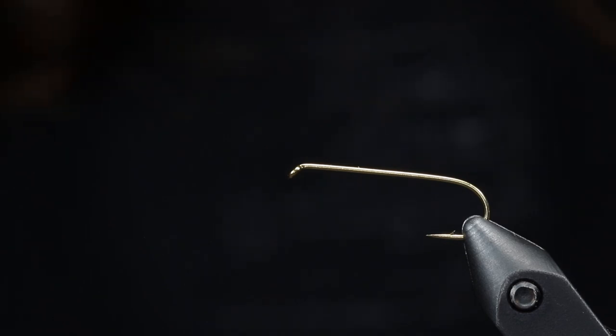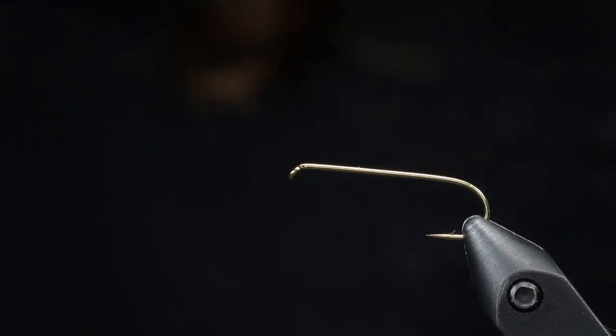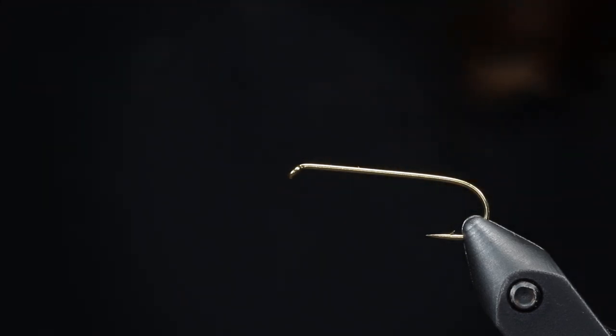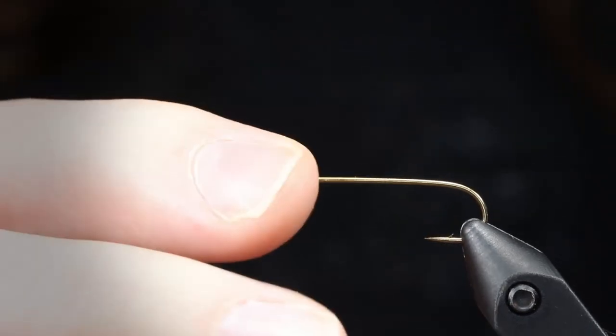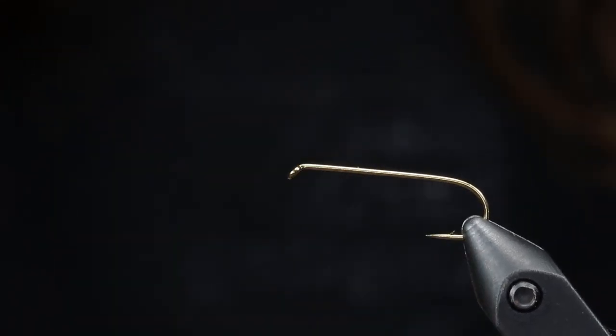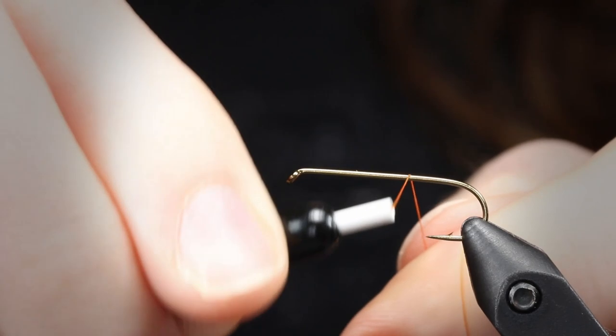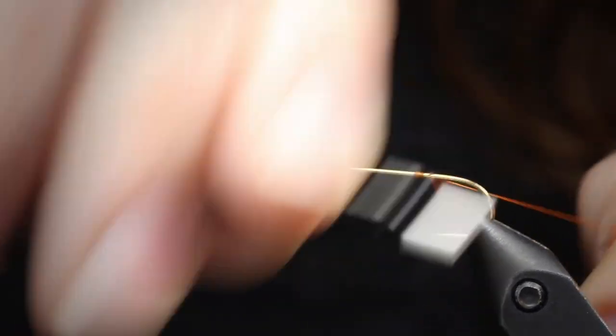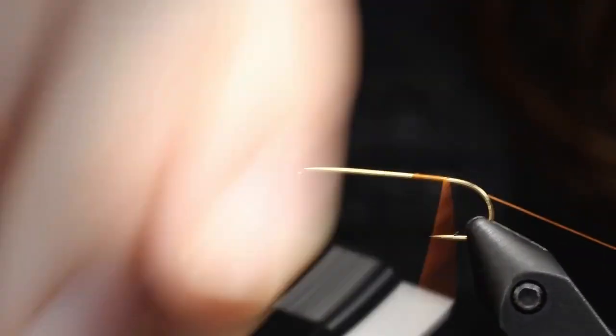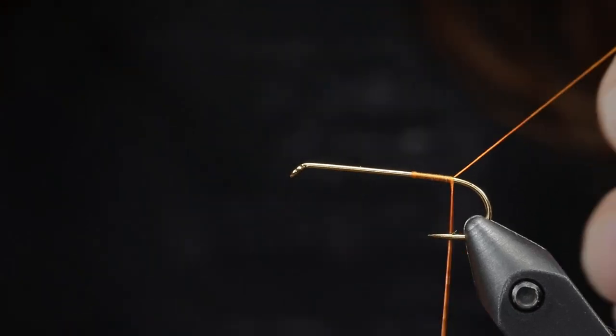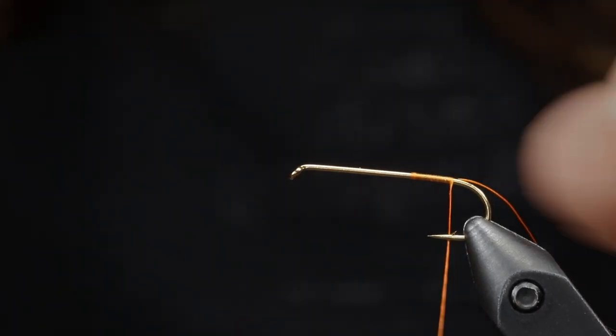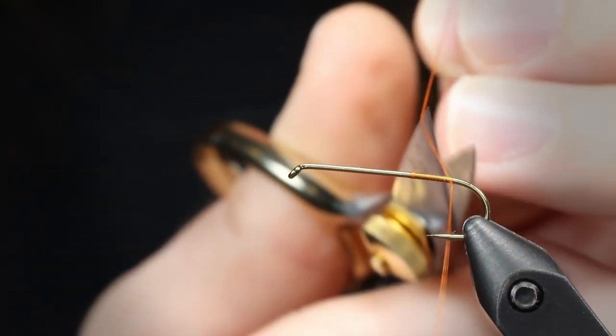Once your legs are prepped, you're going to use a size 8 2X long dry fly hook and you're going to use a 6-0 orange thread. I like orange because a lot of the crane flies, especially around here in Wisconsin, have kind of like an orange look to them and I just think it pairs really well with the fly pattern.